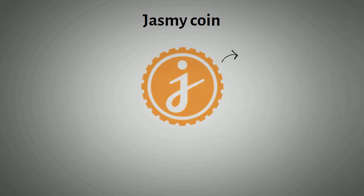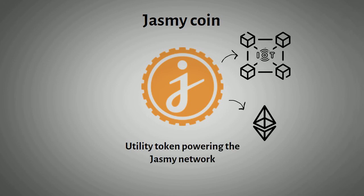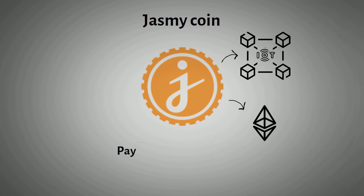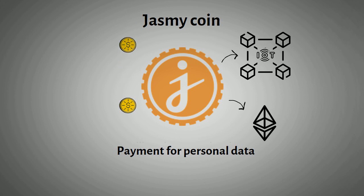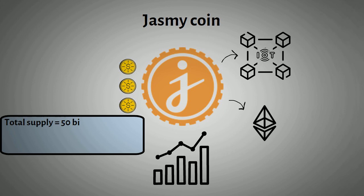Jasmine is an organization that develops decentralized IoT platforms using a decentralized storage network hosted on the Ethereum network. Its native token, Jasmine Coin, serves as a utility token powering the Jasmine network. The primary purpose of the Jasmine token is as payment for personal data from IoT devices — currently it's the only valid currency on the Jasmine network. As more organizations turn to Jasmine, demand for Jasmine tokens will increase. Jasmine has a total supply of 50 billion, with a market cap of about $56.9 million, and is currently trading around one cent.